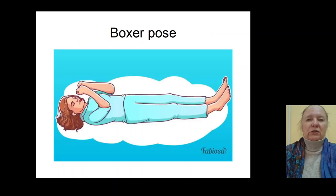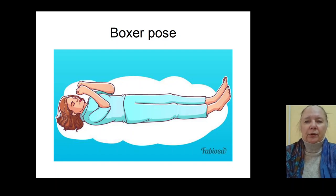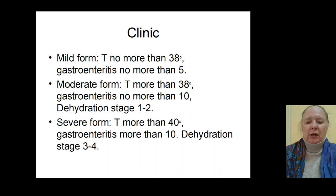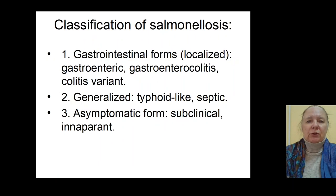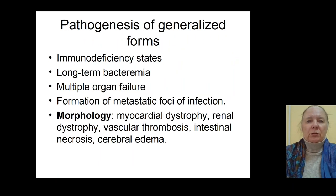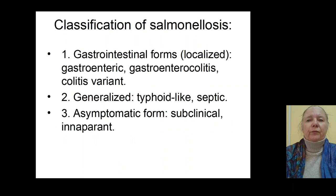You can see the pose of boxer — dehydratory shock, tonic cramps, pose of boxer, pose of gladiator — characterized by dehydratory shock in the patient. The next forms are general forms of infection: typhoid-like forms and septic forms.